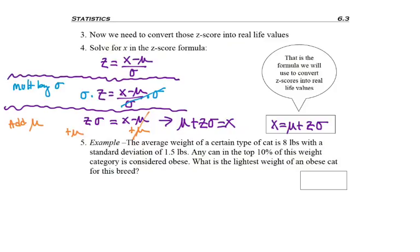What is the lightest weight of an obese cat for this breed? So now be careful because it says lightest weight, but we're considering the top 10% because basically we're asking for the starting point of those obese cats. So I take the information I was already given: a mean of 8, a standard deviation of 1.5, and I want to work with the top 10%.